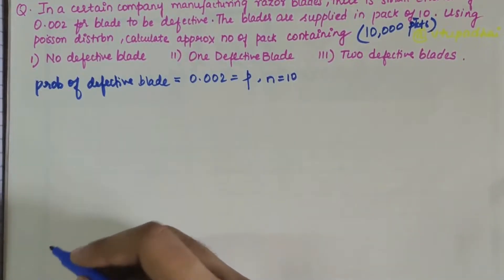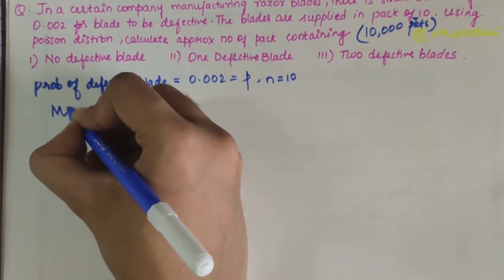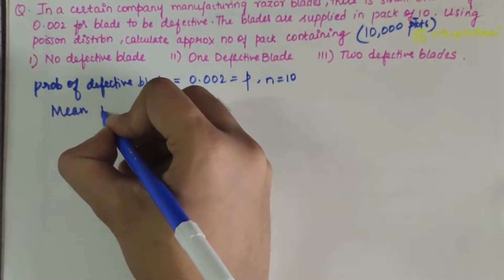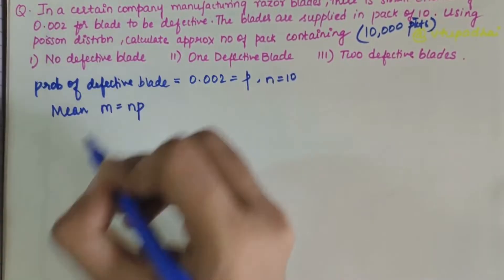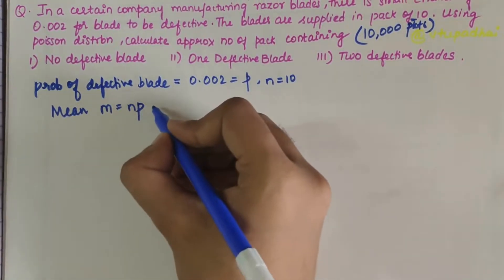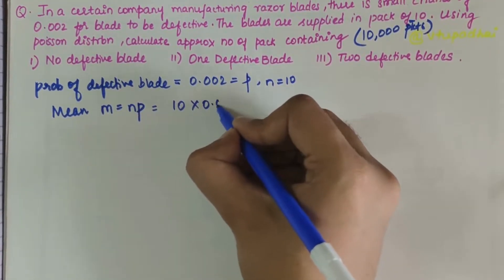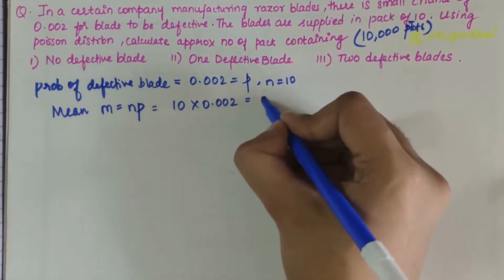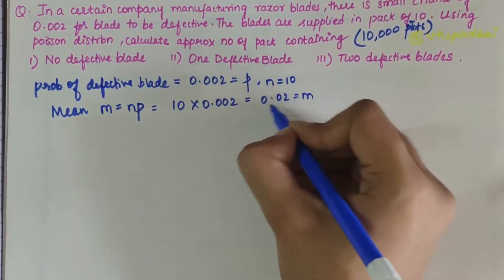We have to calculate the mean, M, which equals N times P. So M = 10 × 0.002 = 0.02.